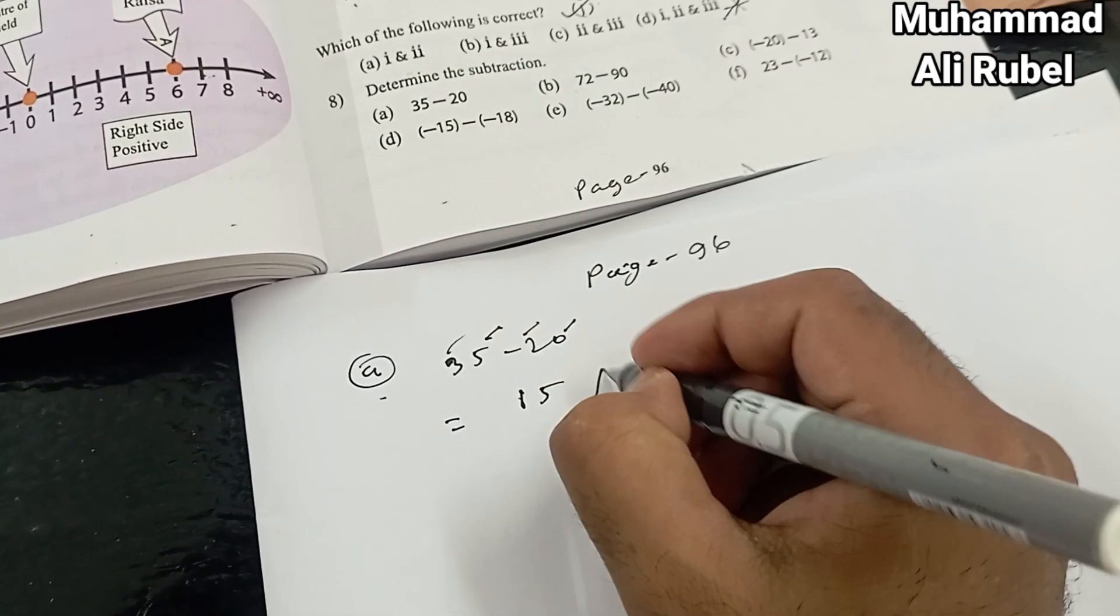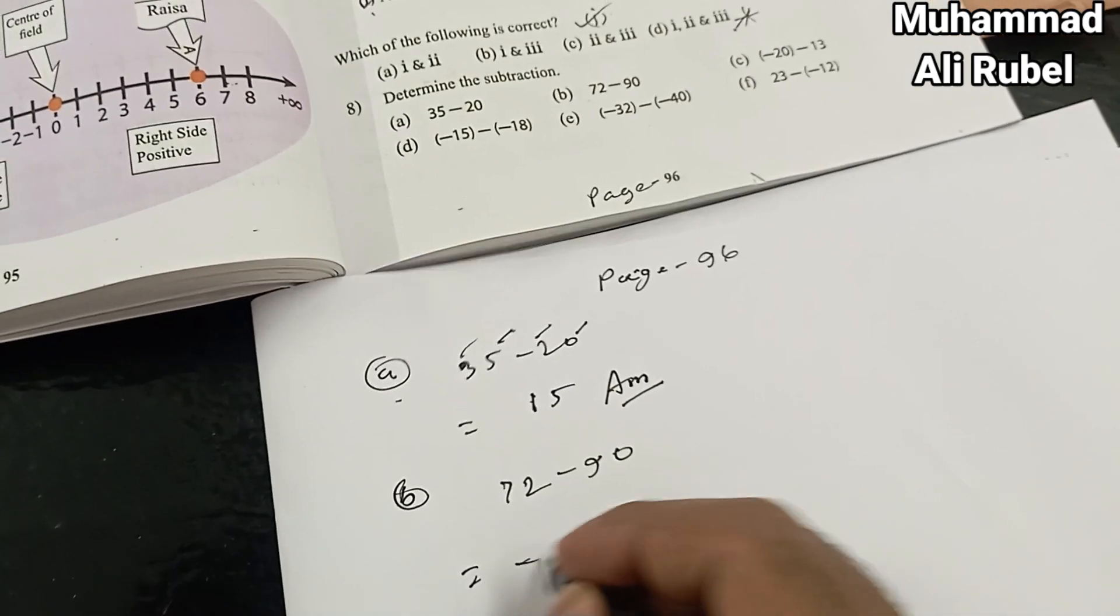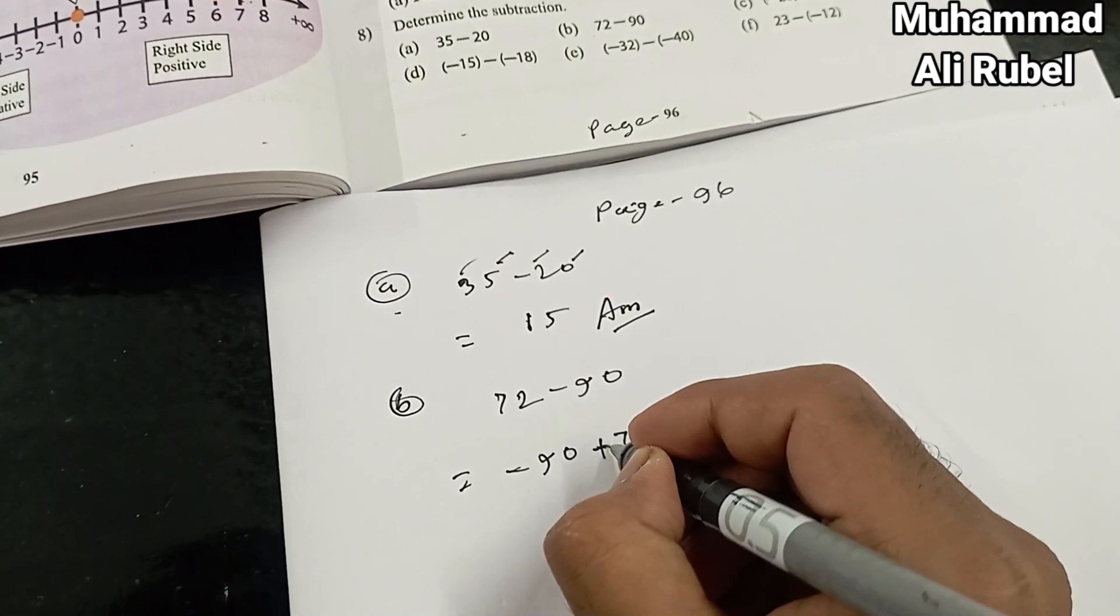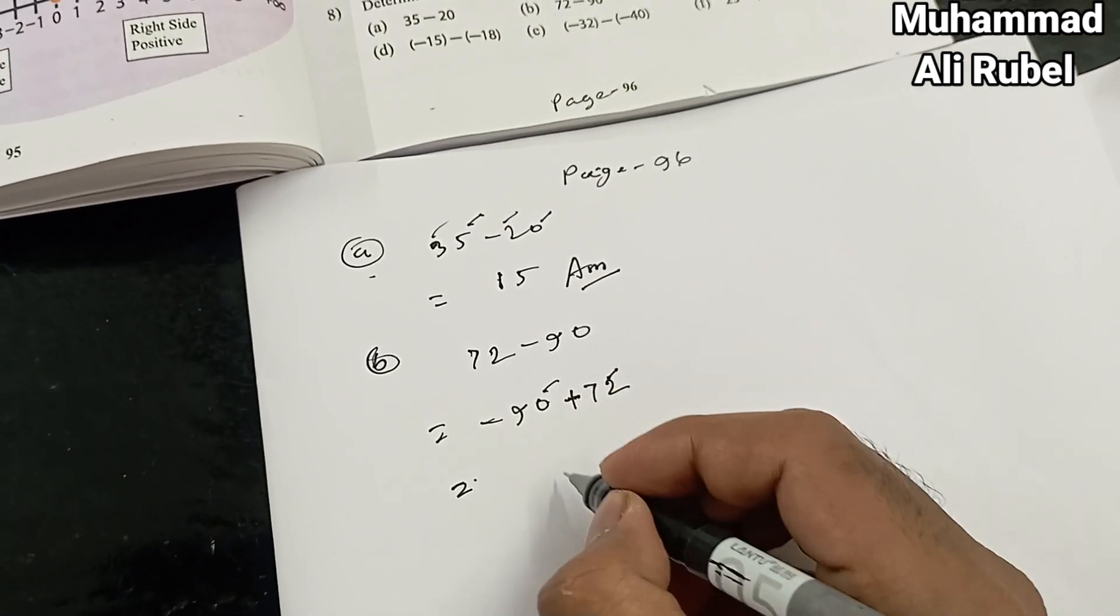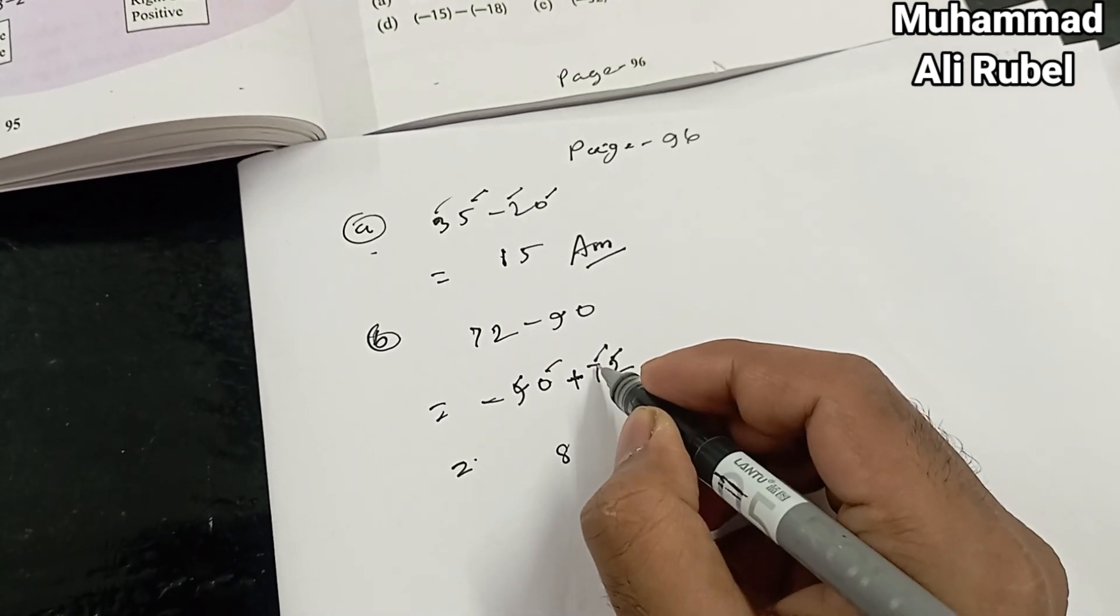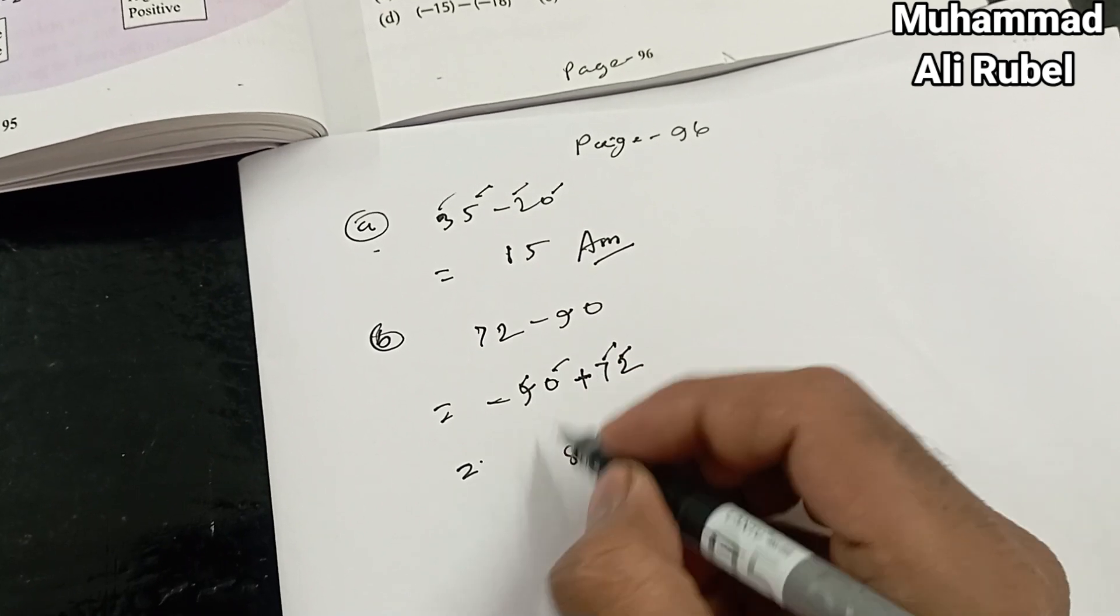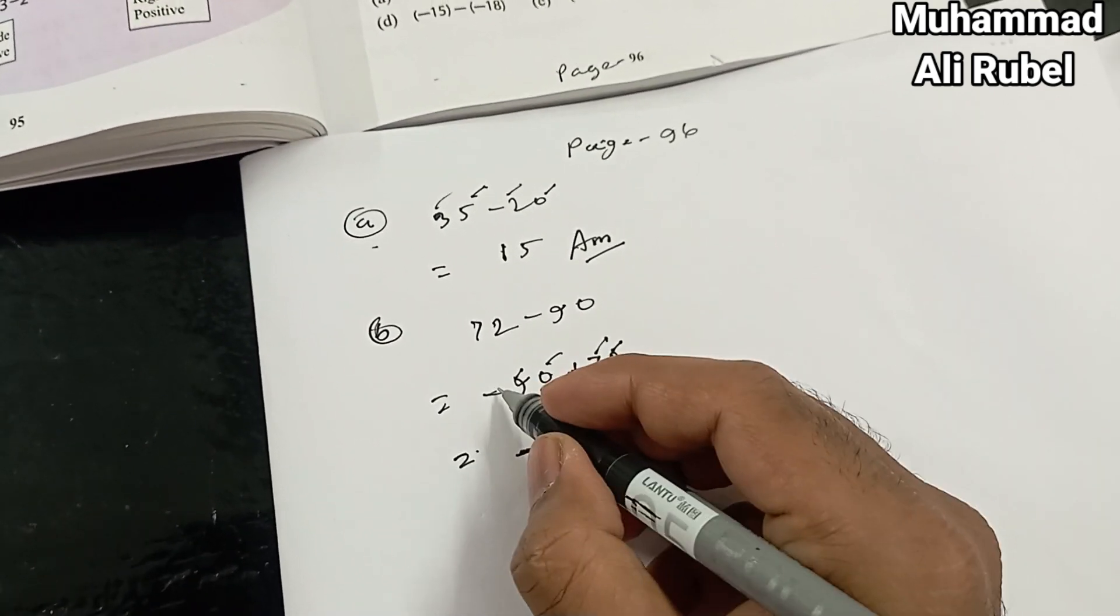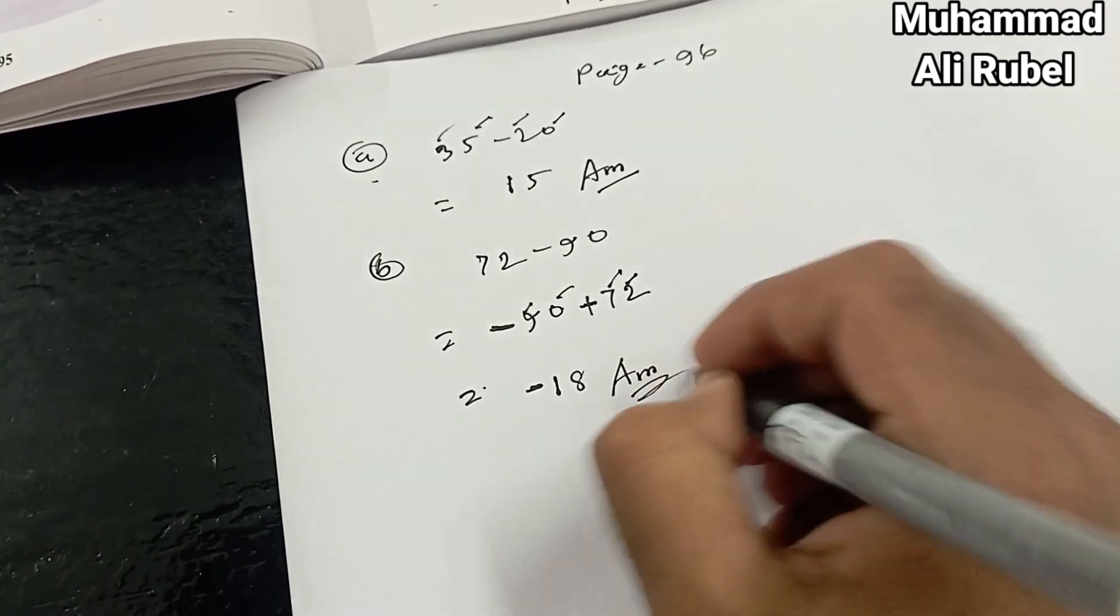The answer is 15. Then number (b): 72 minus 90. 72 is positive, then we subtract from it. 10 minus 2 equals 8, and 9 minus 8 carries 1. From 9 we subtract 8 equals 1, so if the greater number is minus, that's why the answer is minus 18.